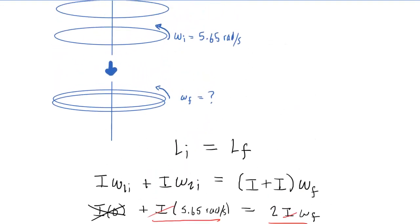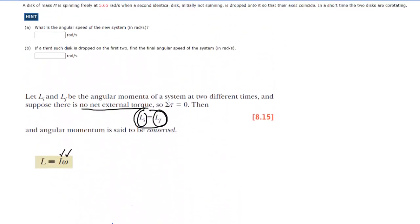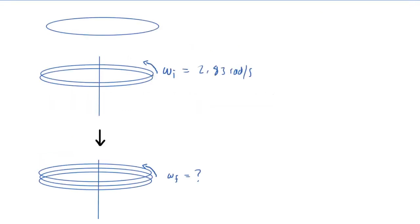That is the final angular speed of the two disk system and the answer to part A. Now for part B, a third disk is going to be dropped on the first two, and we again need to find the final angular speed. The two disk system's initial angular speed will now be the value obtained in part A: 2.83 radians per second. We're dropping a third disk on top, and we seek the final angular speed of the three disk system.